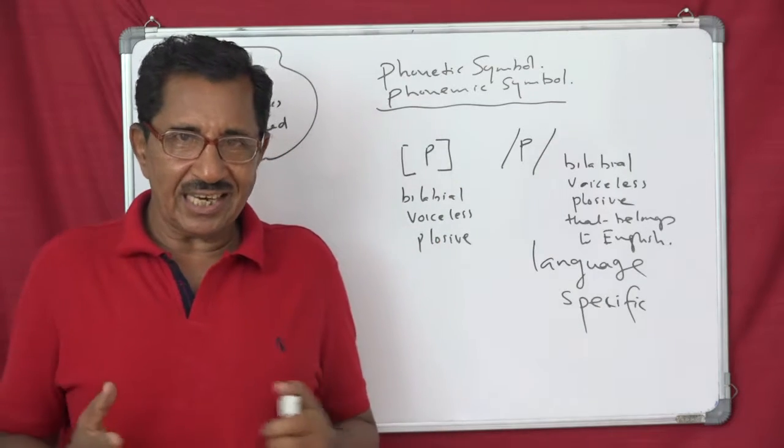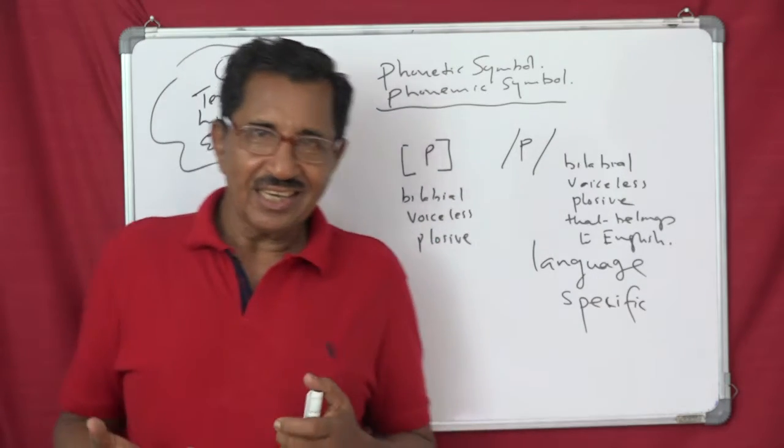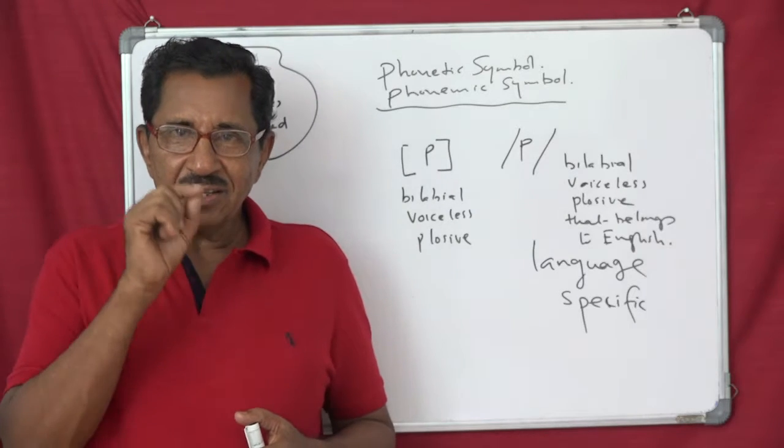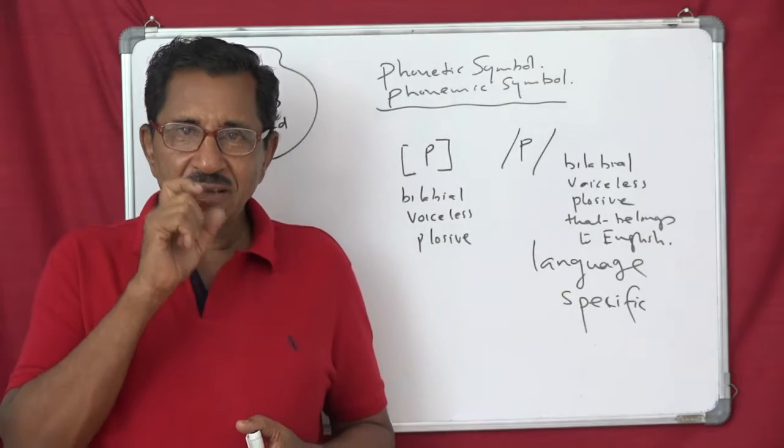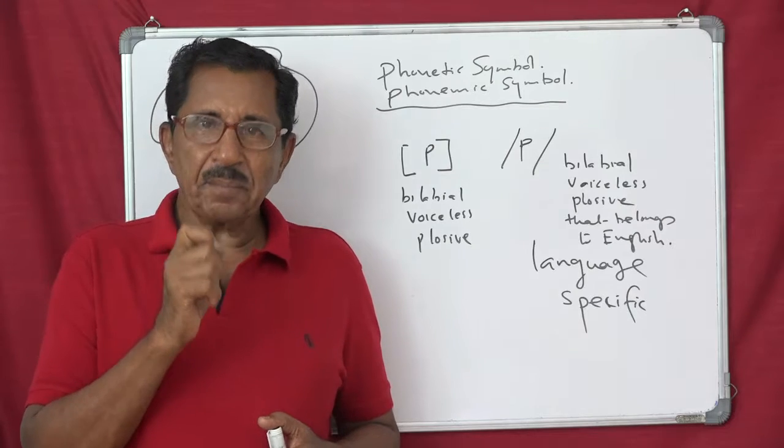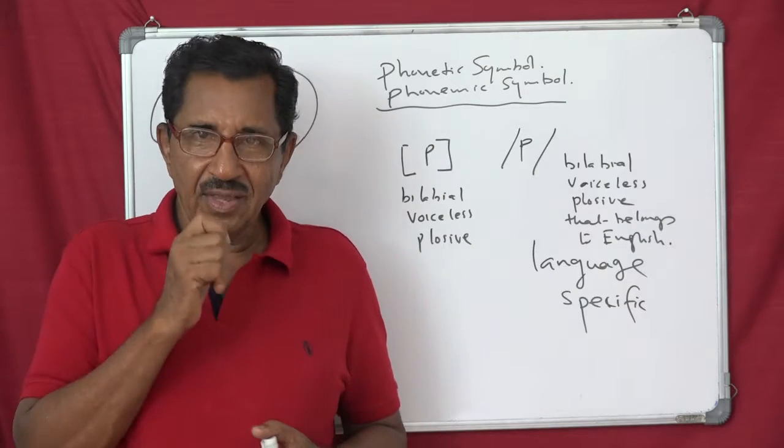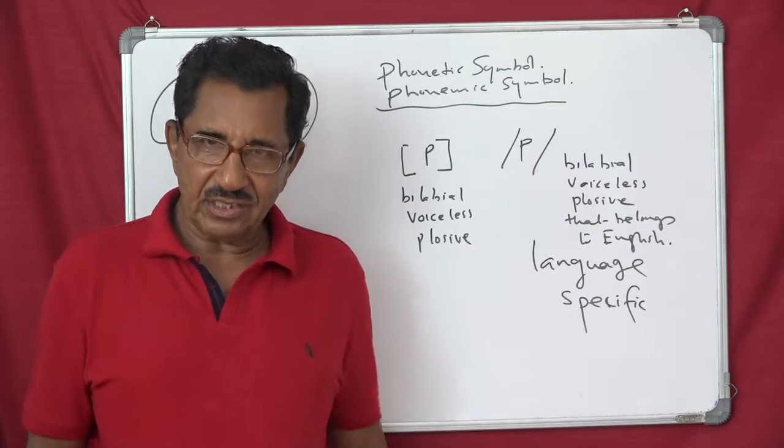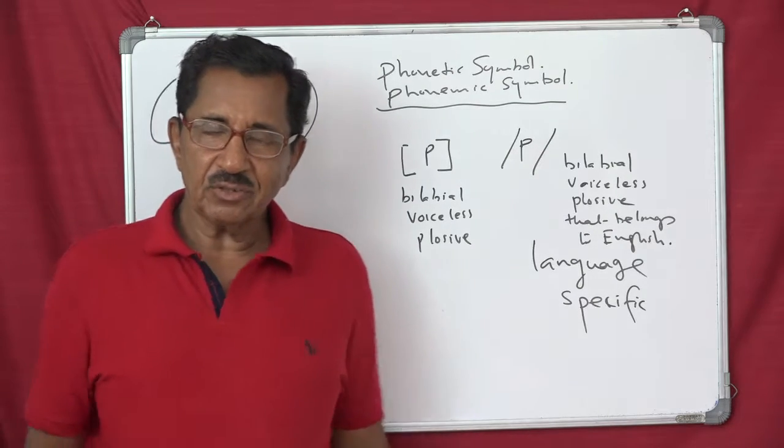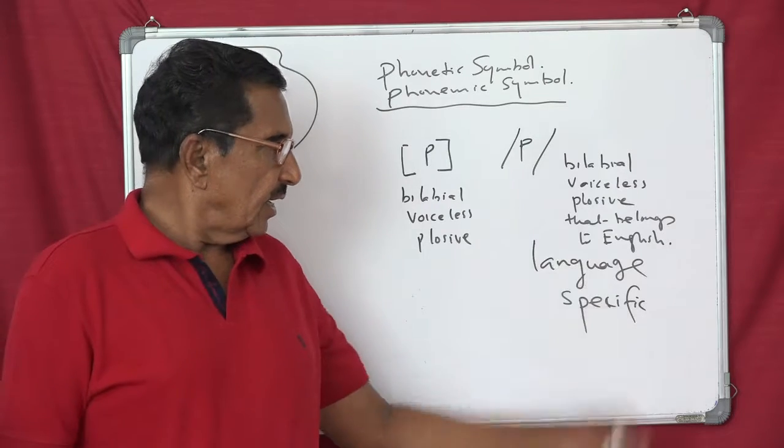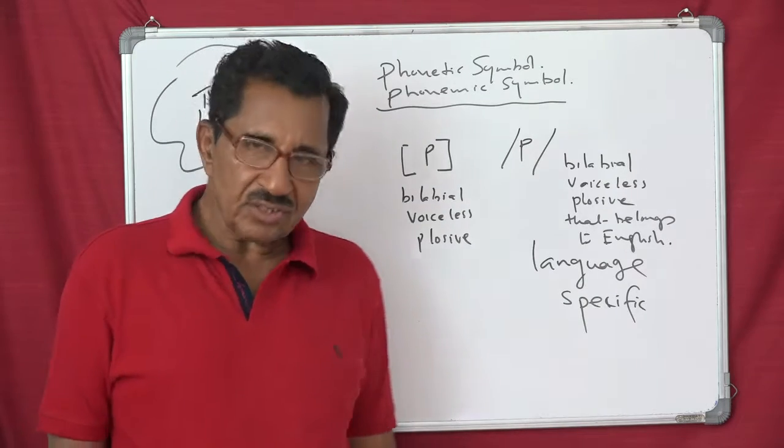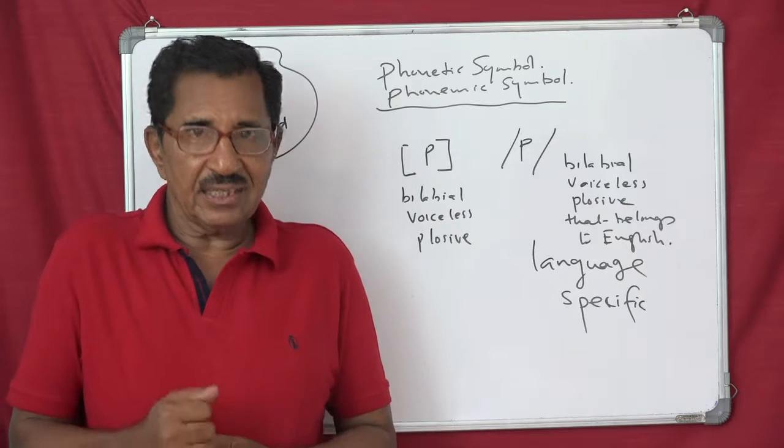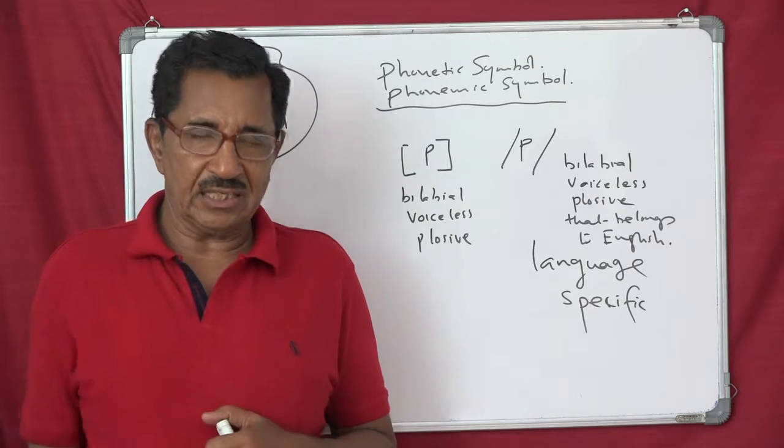But when you write like this, it shows, I think now it is clear, I need not go any further. It shows that both the lips, the place of articulation is two lips, and the vocal cords don't vibrate, therefore voiceless, and plus you can say that it is a plosive, plosion sound, and it belongs to the English language. Understand?